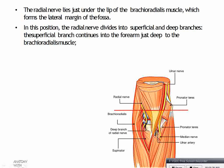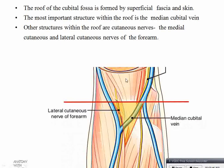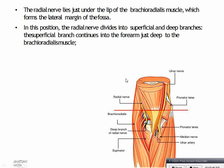The superficial branch continues in the forearm just deep to the brachioradialis muscle. The deep branch passes between the two heads of supinator muscle and reaches the posterior aspect of the forearm, continuing there as the posterior interosseous nerve.